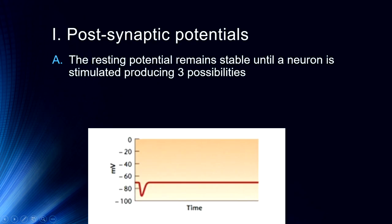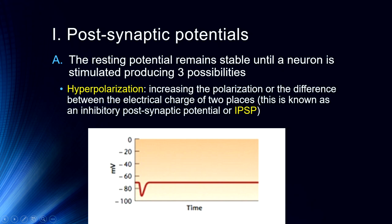The resting potential of a membrane remains stable until a neuron is stimulated, which produces three possibilities. First is hyperpolarization, which increases the polarization or the difference between the electrical charge across the membrane — essentially making the charge more negative. This is known as an inhibitory postsynaptic potential, or IPSP. In order to generate a neural signal we have to depolarize the cell, so by hyperpolarizing the cell we make it less likely that an action potential will be generated, because a greater level of excitation is now necessary.